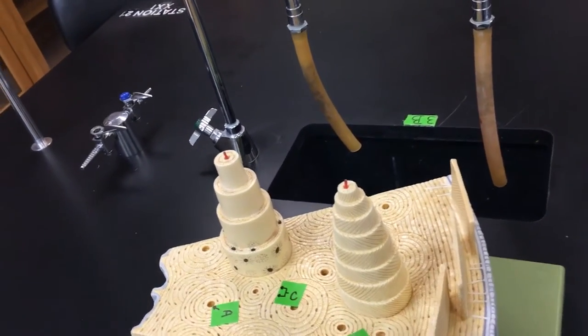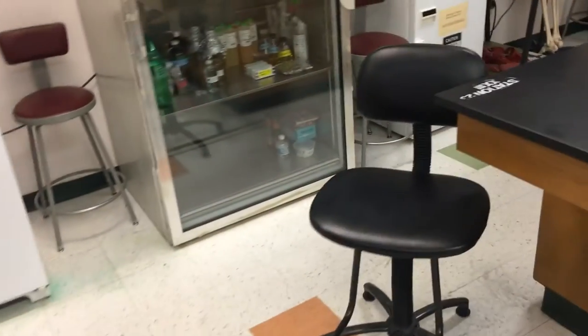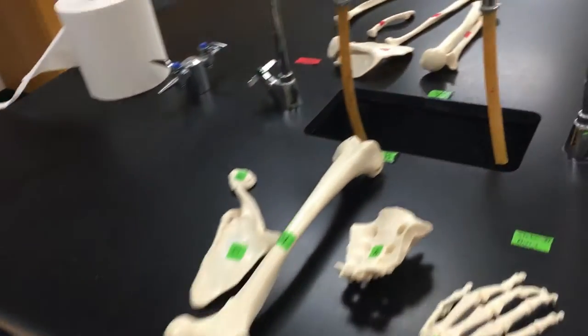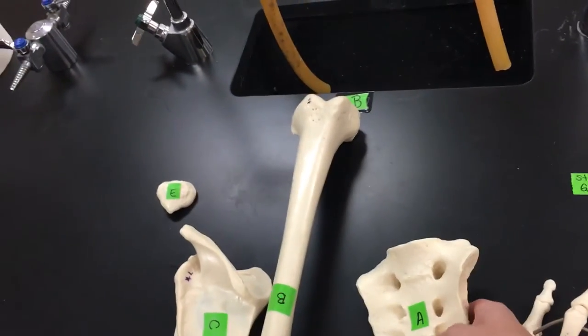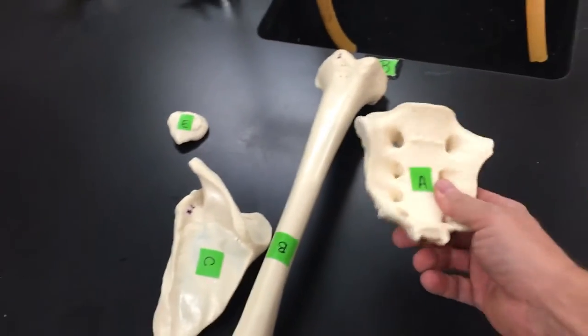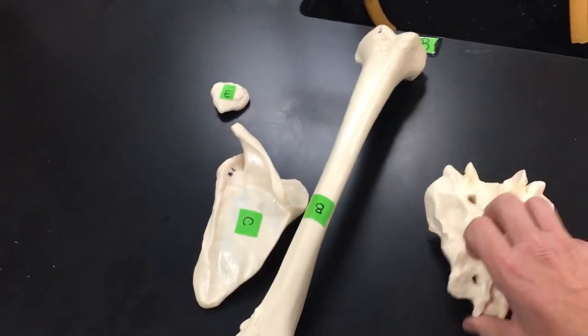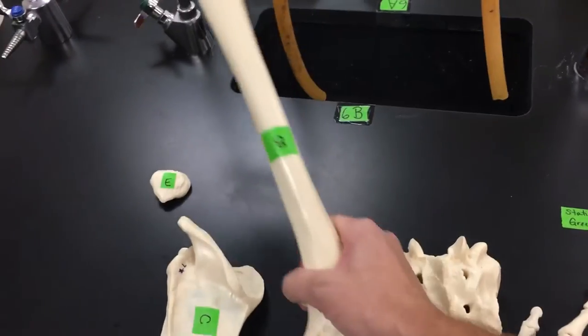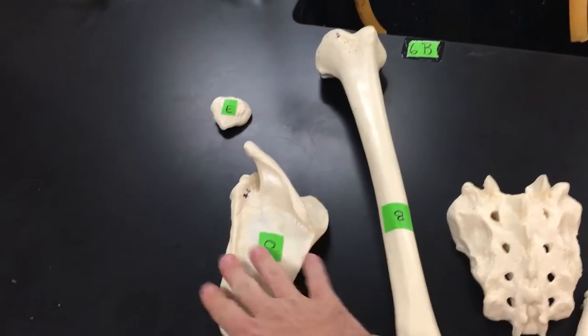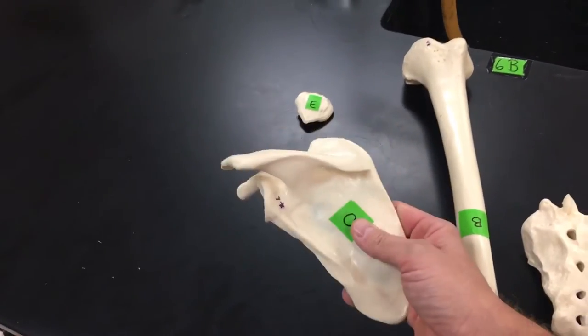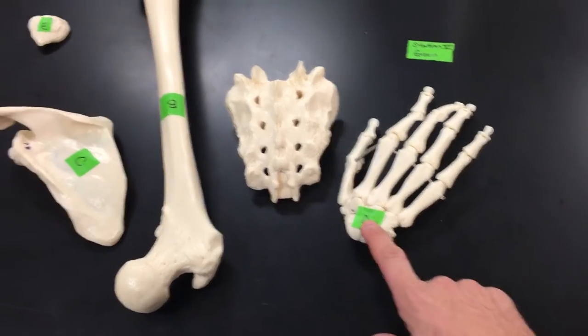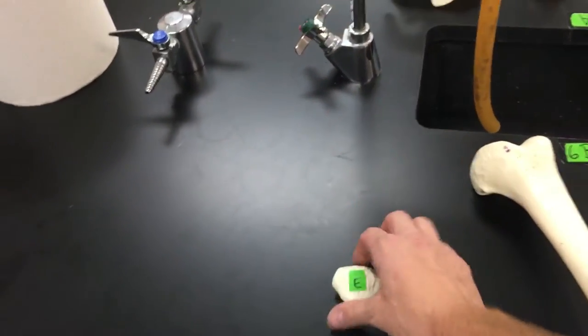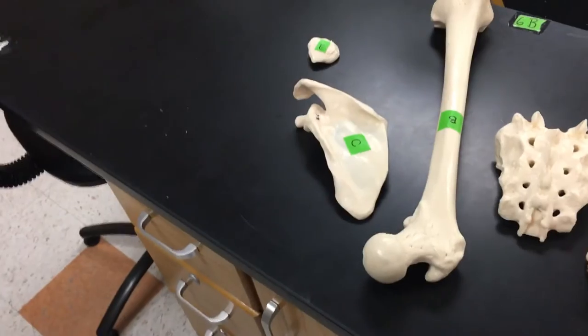Moving right along to section 6, this will be identifying the types of bones. A is an irregular bone. B is a long bone. C is a flat bone. D are short bones. And then E is a sesamoid bone.